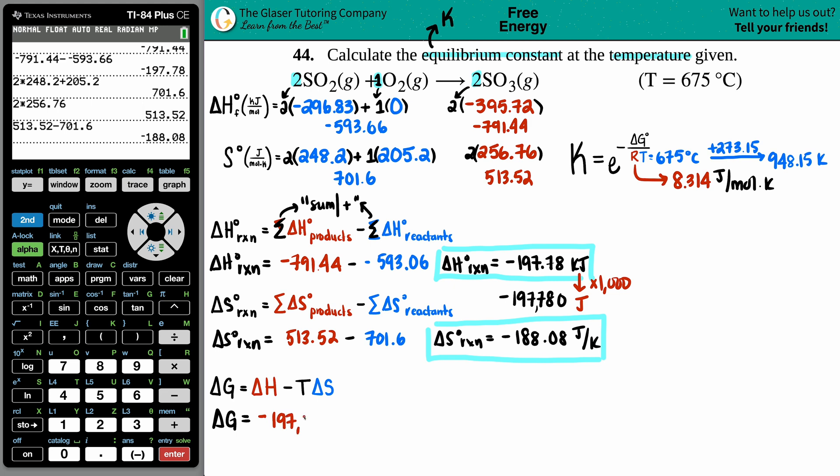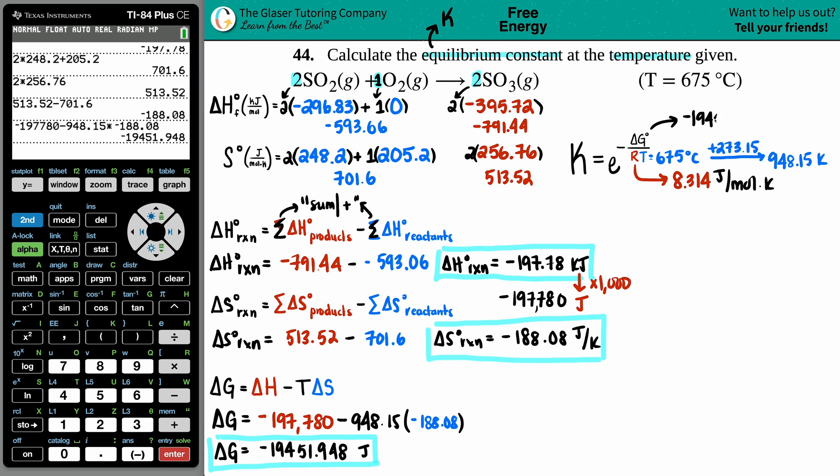ΔG = -197,780 minus the temperature 948.15 times ΔS which was -188.08. Plug this all into the calculator: -197,780 minus 948.15 times that ΔS value. It's spontaneous - negative. We get -19,451.948. I'm not rounding because this isn't the answer yet. ΔG would be this number.